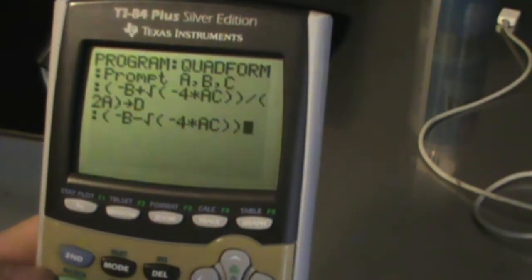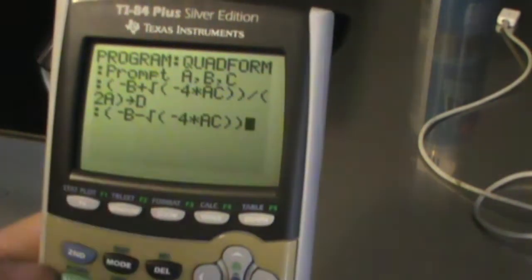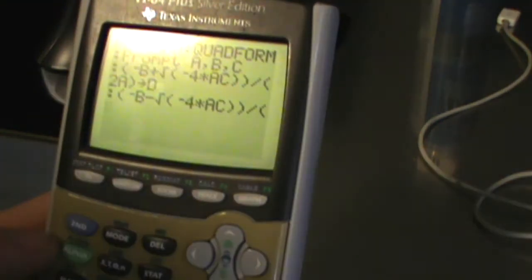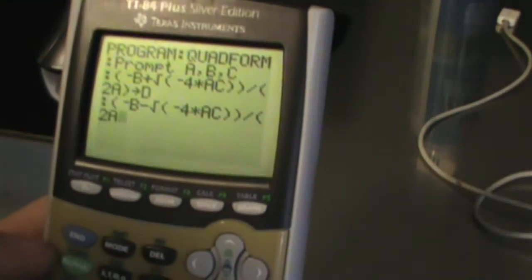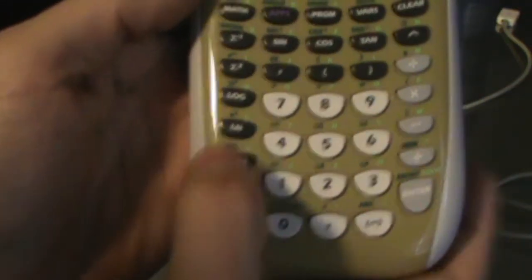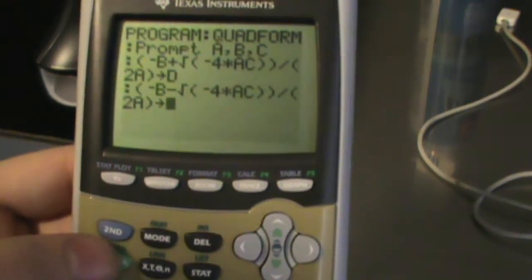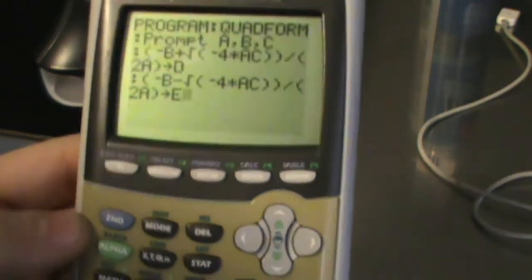Double parenthesis—if you don't do a double parenthesis, it won't work. Divide by, open parenthesis, 2A, close parenthesis. You're going to hit the store button again. Store. And we're going to do E this time. Enter.